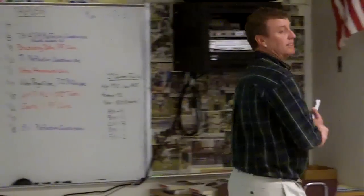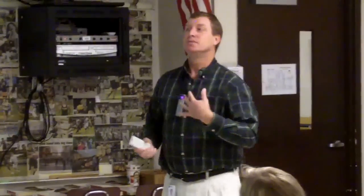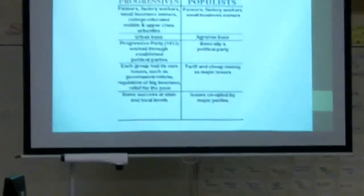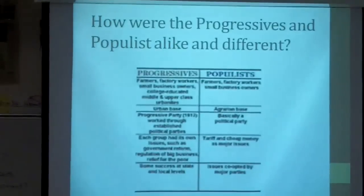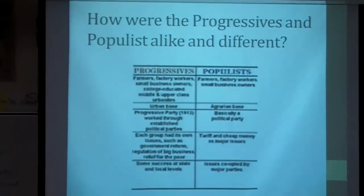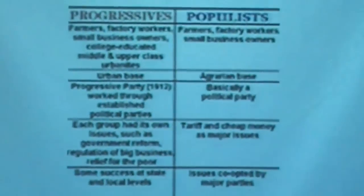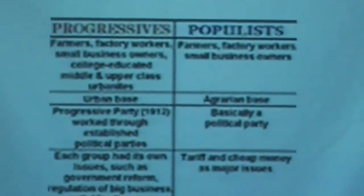How are the populists and progressives alike? The populists come about before the progressives — William Jennings Bryan. There were a lot of things the populists were encouraging that the progressives would end up adopting — some by Democrats, some by Republicans. This happens a lot in America where third parties come about and the other parties adopt their ideas.